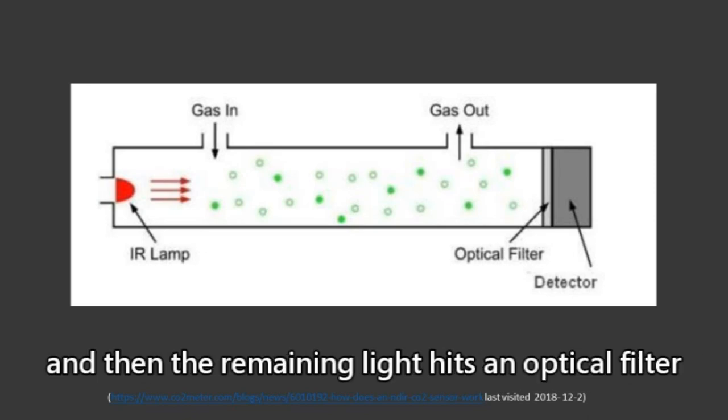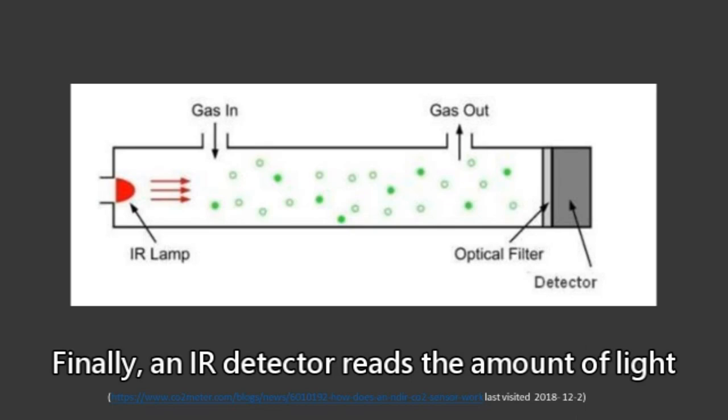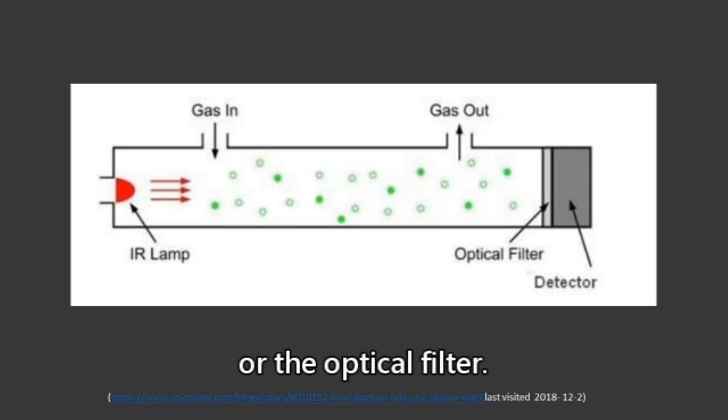And then, the remaining light hits an optical filter that absorbs every wavelength of light. Finally, an IR detector reads the amount of light that was not absorbed by CO2 molecules or the optical filter.